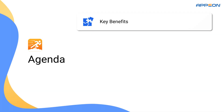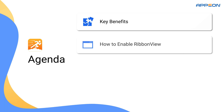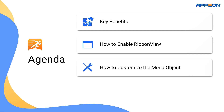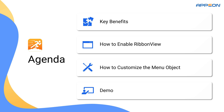Here's what we'll cover in this video. Firstly, the key benefits of using RibbonView. Secondly, how to enable RibbonView in your application. Then how to customize RibbonView settings. And finally, a practical demo to show you everything in action. Let's get started.